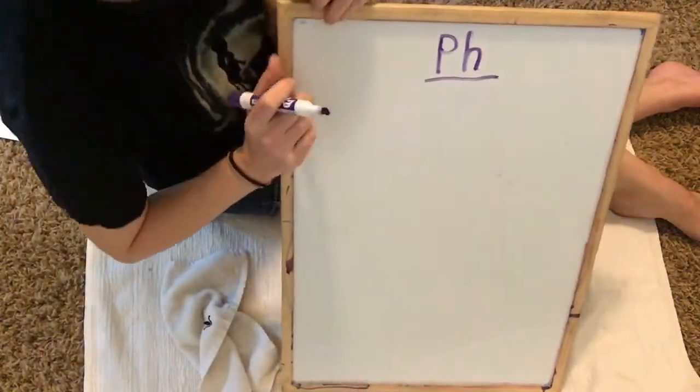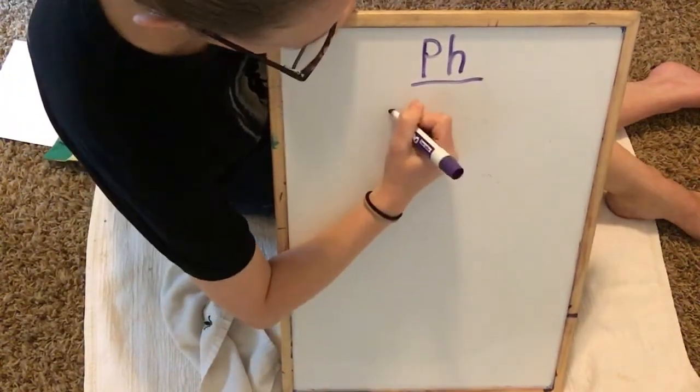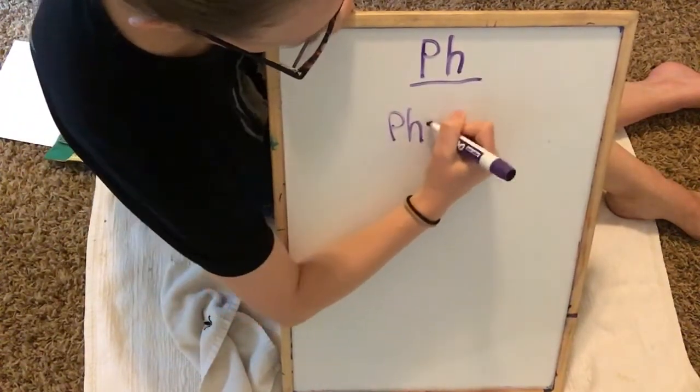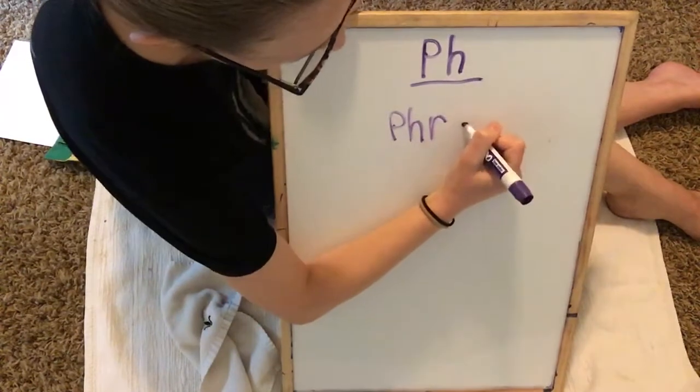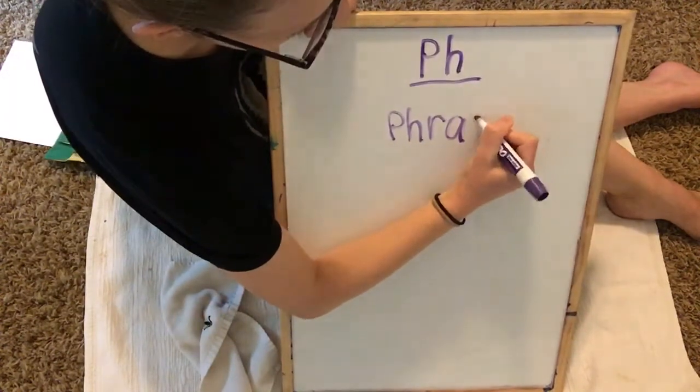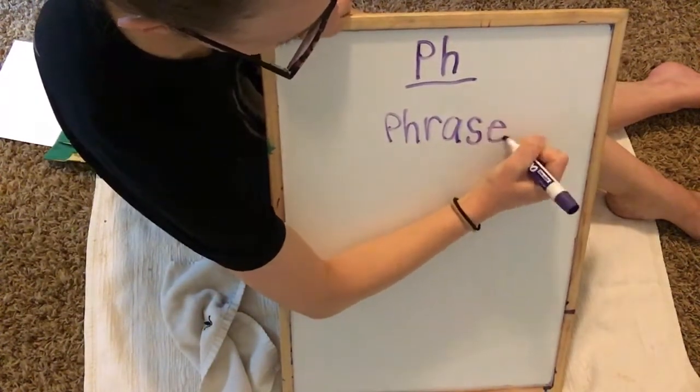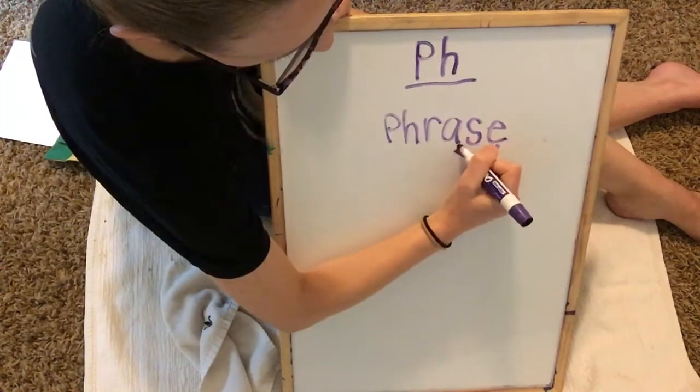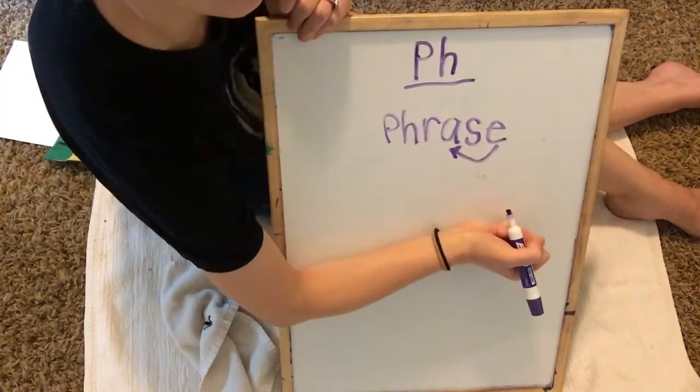All right, phrase. F, R, A, S, magic E, and E is making the A say its name, phrase.